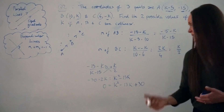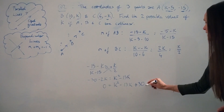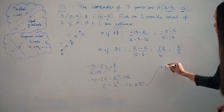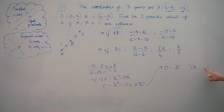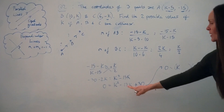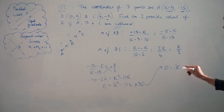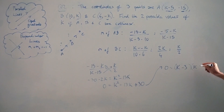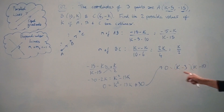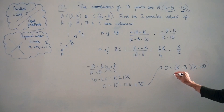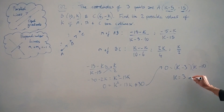You could use the quadratic formula, but I think this one can be factorised. Putting it into brackets — the two numbers have to multiply to give 30 but add to give −13. That should be −3 and −10: they multiply to 30 and add to −13. So factorising gives (K−3)(K−10) = 0, meaning K is either 3 or 10. That's the answer.